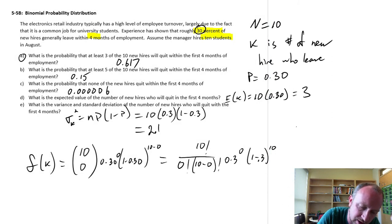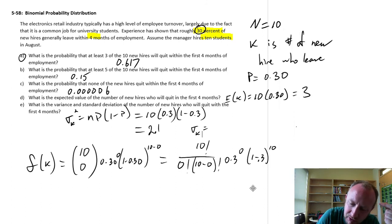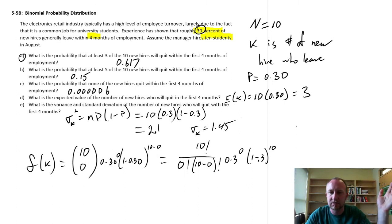2.1 is our variance. And our standard deviation is simply the square root of this. So, 1.45. So, there we go. I hired 10 students. I would expect to lose 3 of them in the next 4 months with a standard deviation of 1.45. So, somewhere in that range.